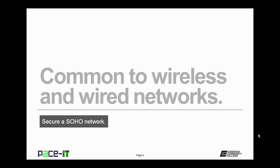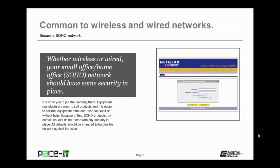We begin by talking about some aspects of security that are common to both wireless and wired networks. Now whether wired or wireless, you should have some security in place, and that security is up to you to enable. Equipment manufacturers are in the business of selling networking equipment, and it's easier to sell it if it's easier to set up. What that means is that as a default, most equipment does not come with security enabled — so it is up to you to enable that security.